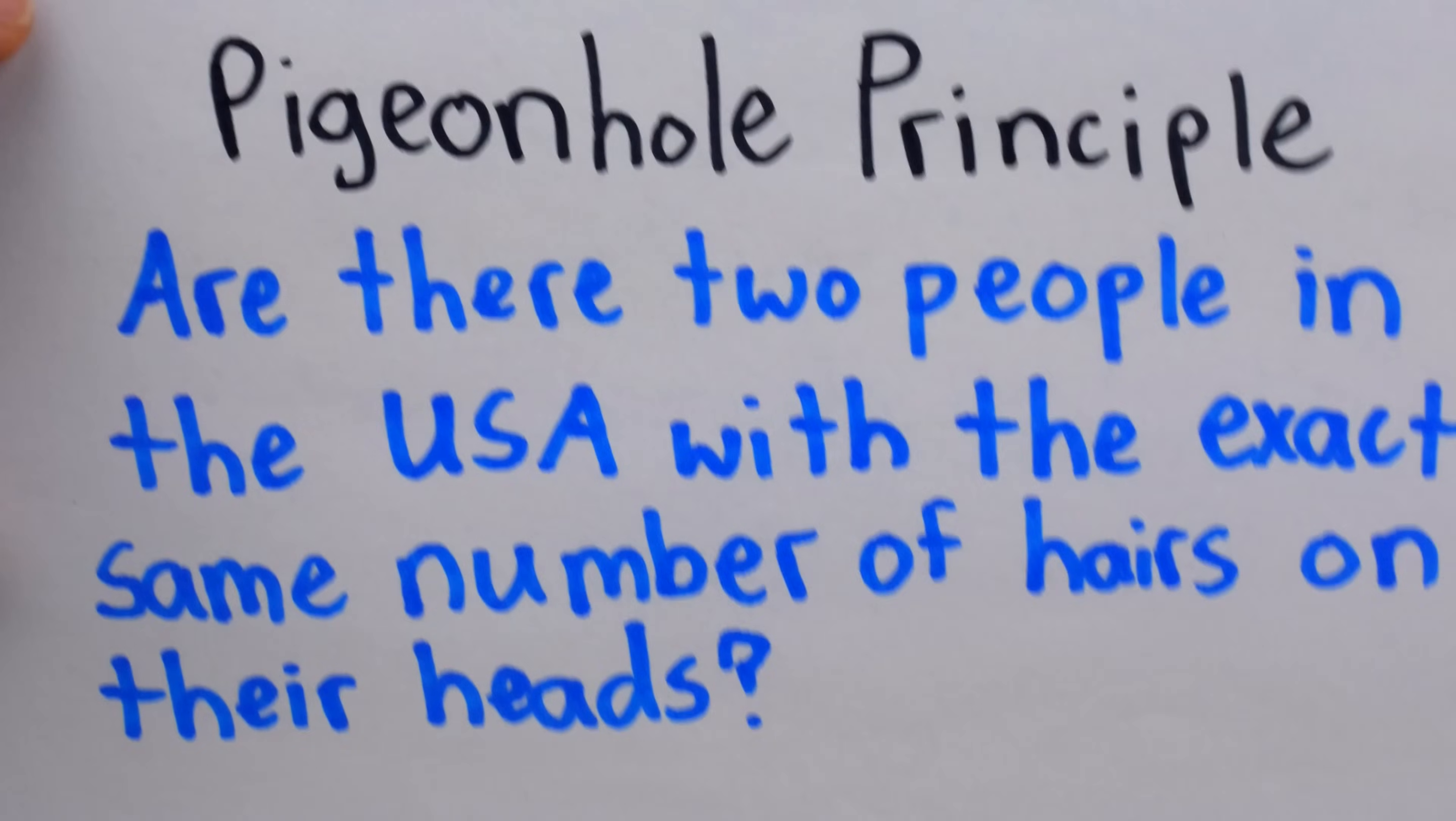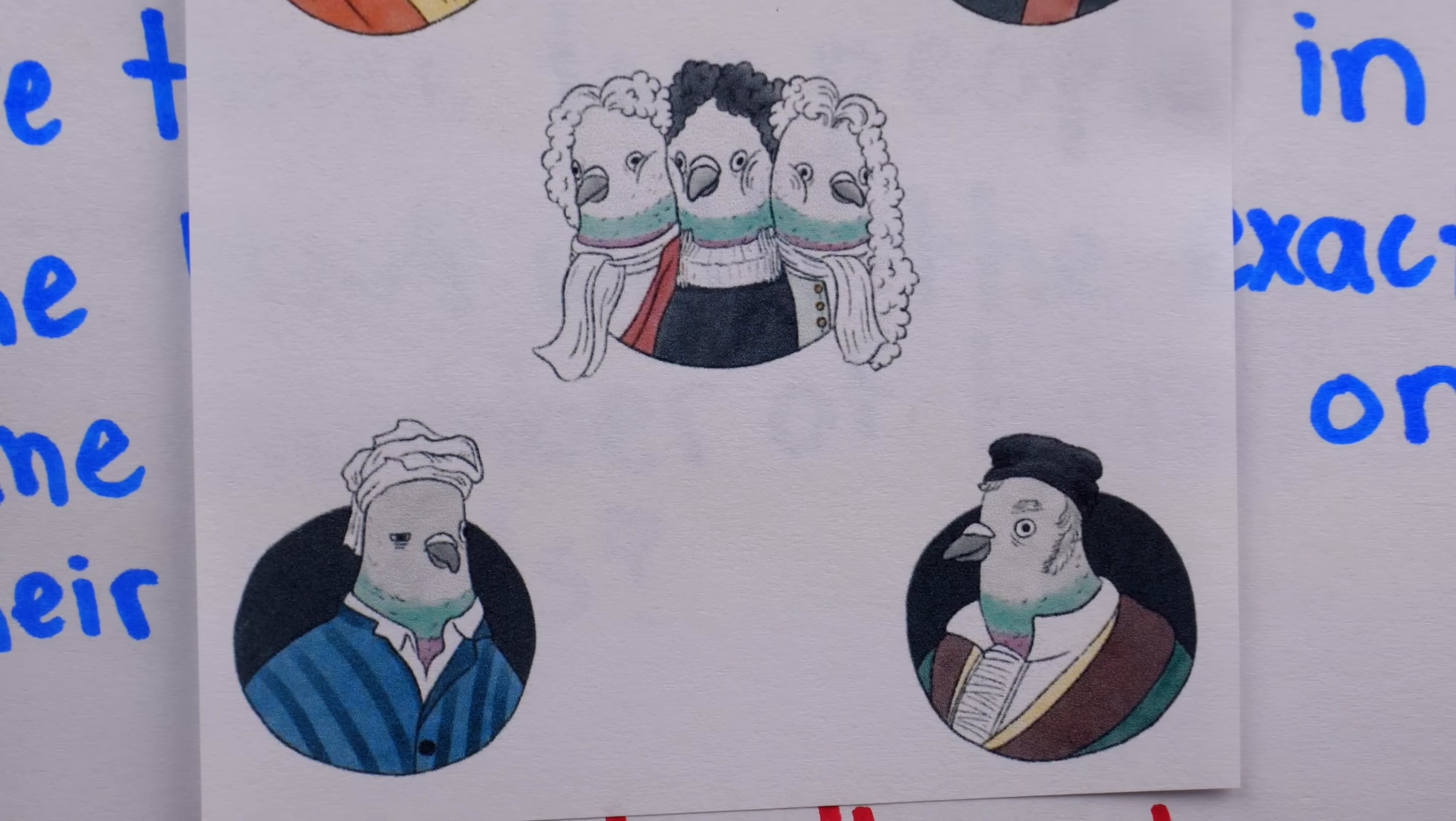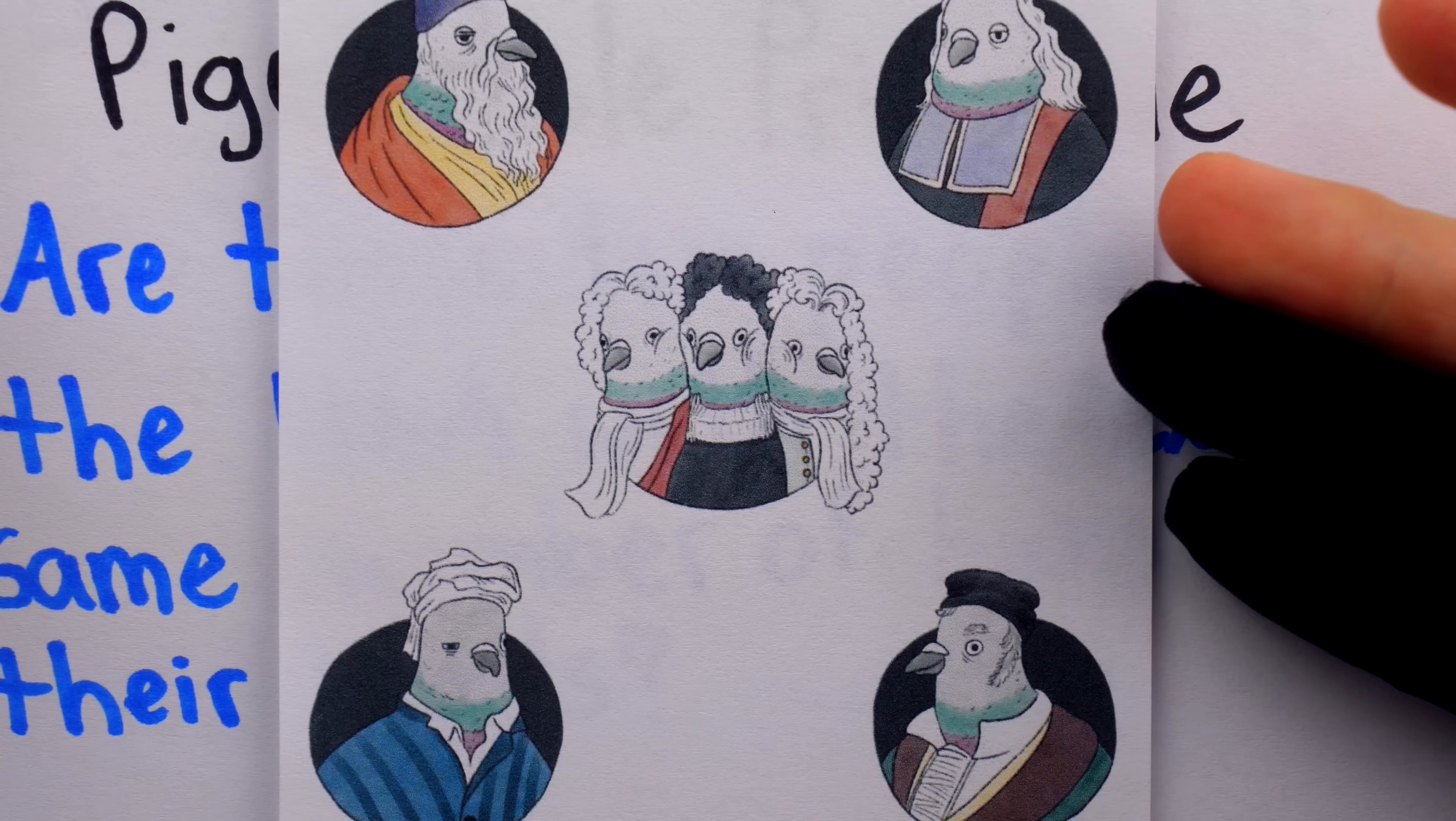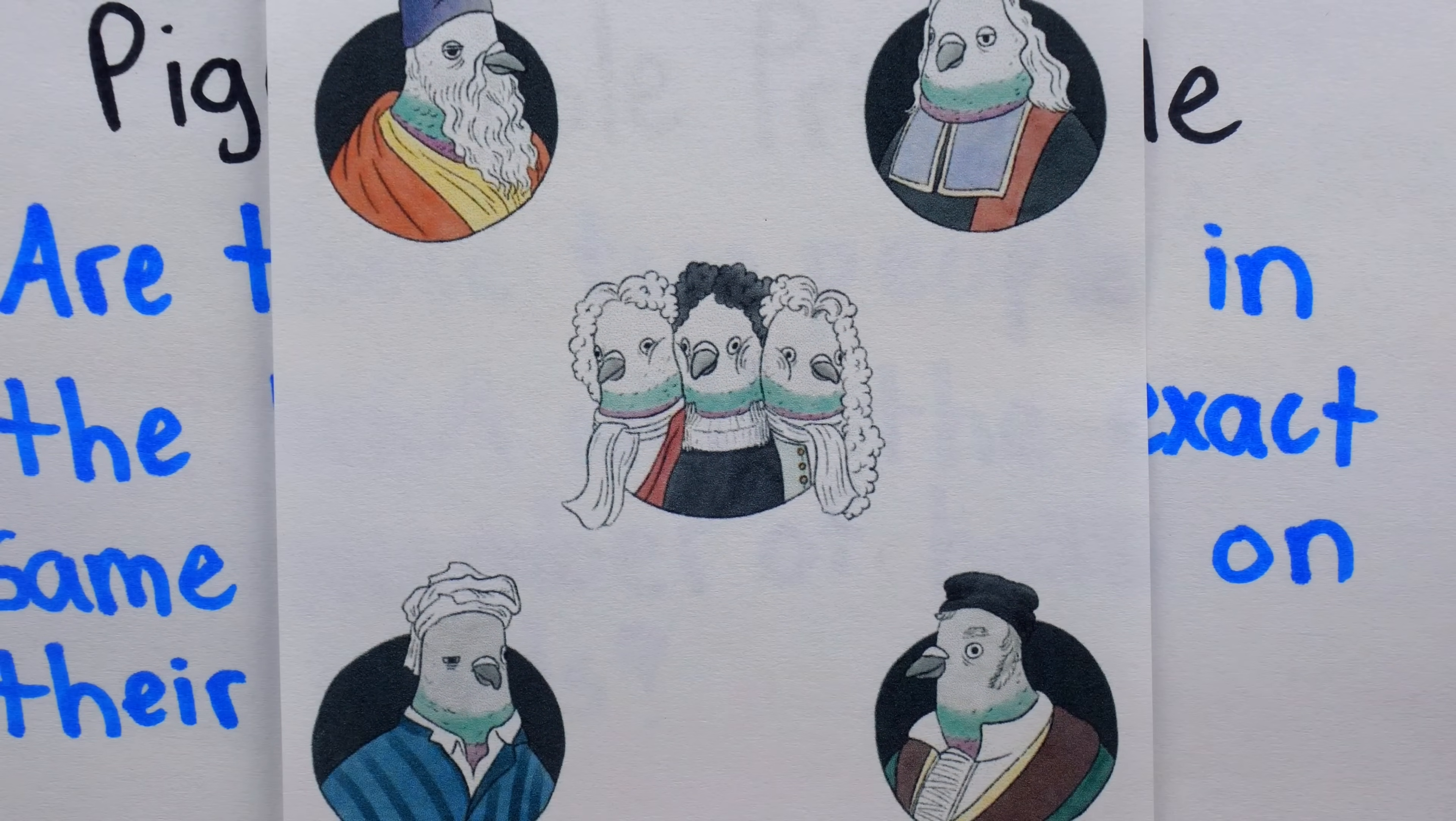The pigeonhole principle is a classic fact of mathematics, it's beloved and it's used all the time, so this is 100% a math design. Of course, perhaps the best part that makes this such an amazing design is that all of the pigeons look like famous mathematicians. Tell me in the comments who you think all of these pigeons are.